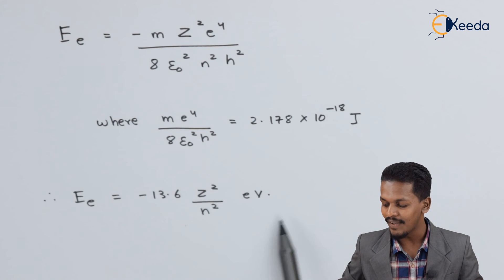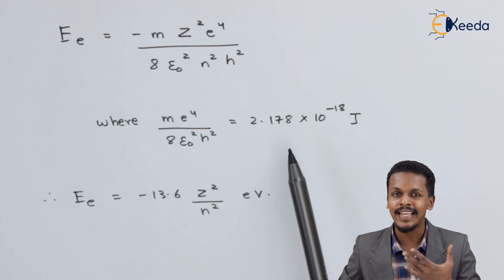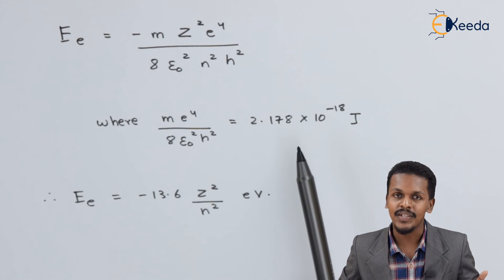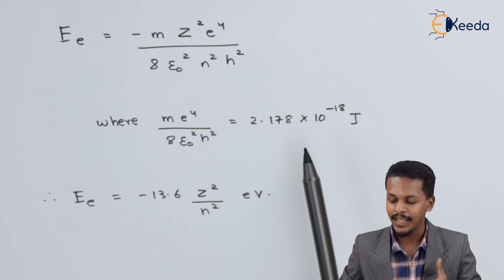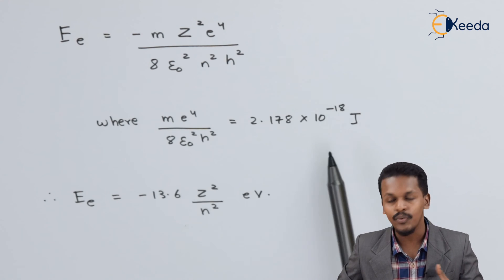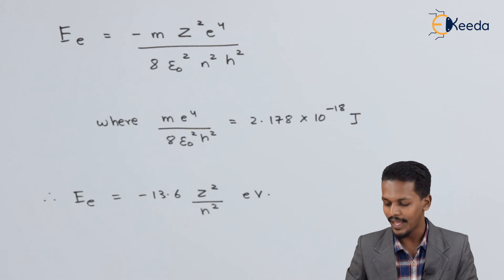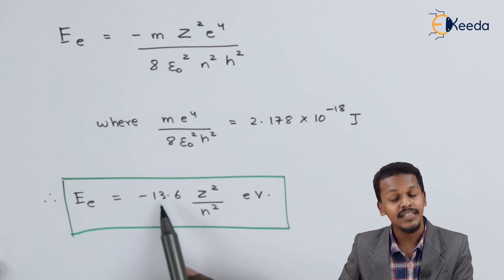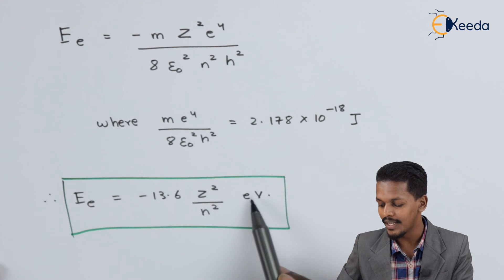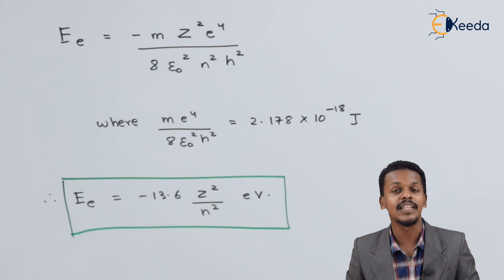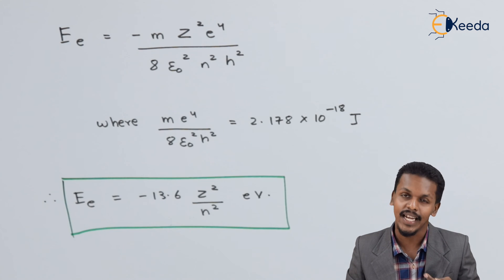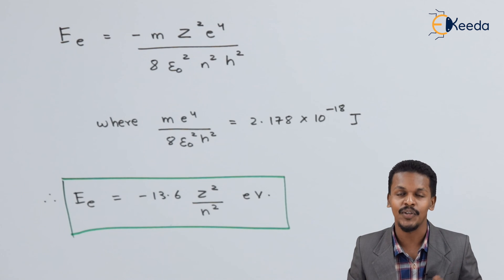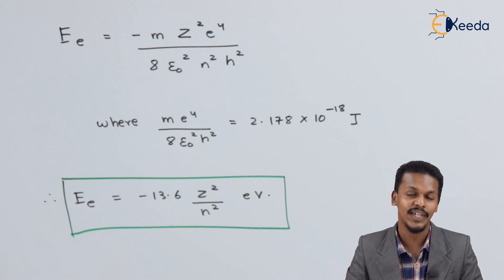We can substitute that value to get the energy in joules. If we want the value in electron volts, using the electron charge of −1.6 × 10⁻¹⁹ coulombs and converting, we get the expression: E = −13.6 Z² / N² electron volts. This is the expression for the velocity, radius, and energy of the electron in a particular shell. Thank you friends for watching this video. I hope you understood it clearly, and I'll see you next time. Don't forget to subscribe to the Ikira channel.